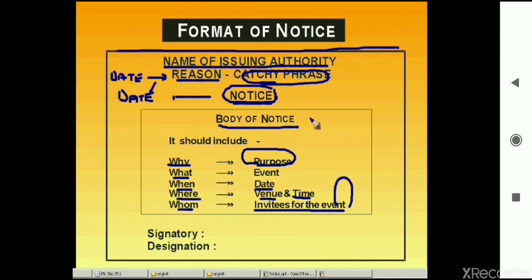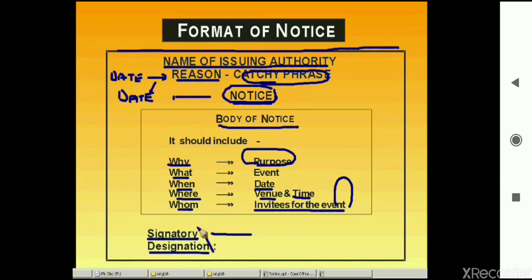At the end, the signatory — that is the person concerned with putting up the notice — his name will be there, along with his designation. The designation of the signatory could be the head boy of the school, the prefect, or the GM of the organization. So this is, in short, how your notice will look.